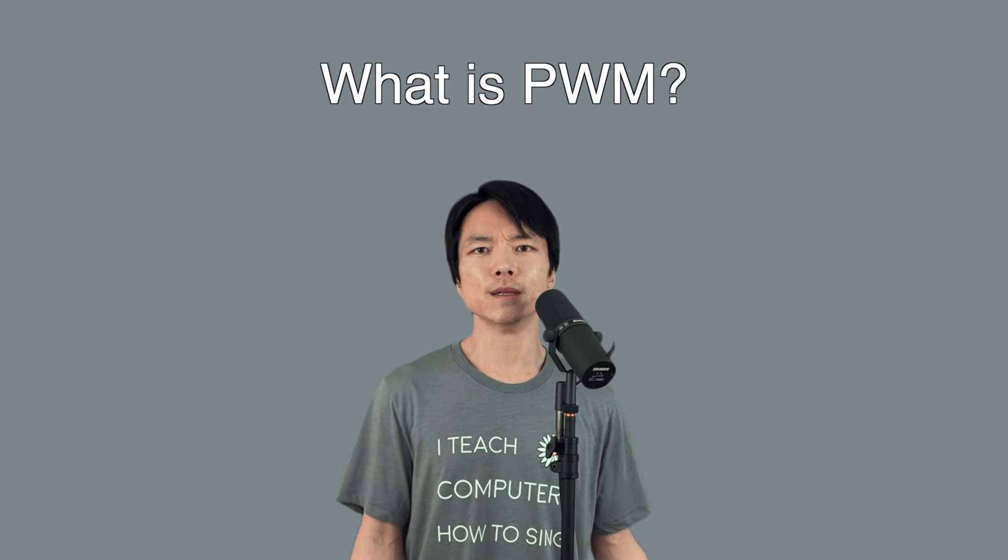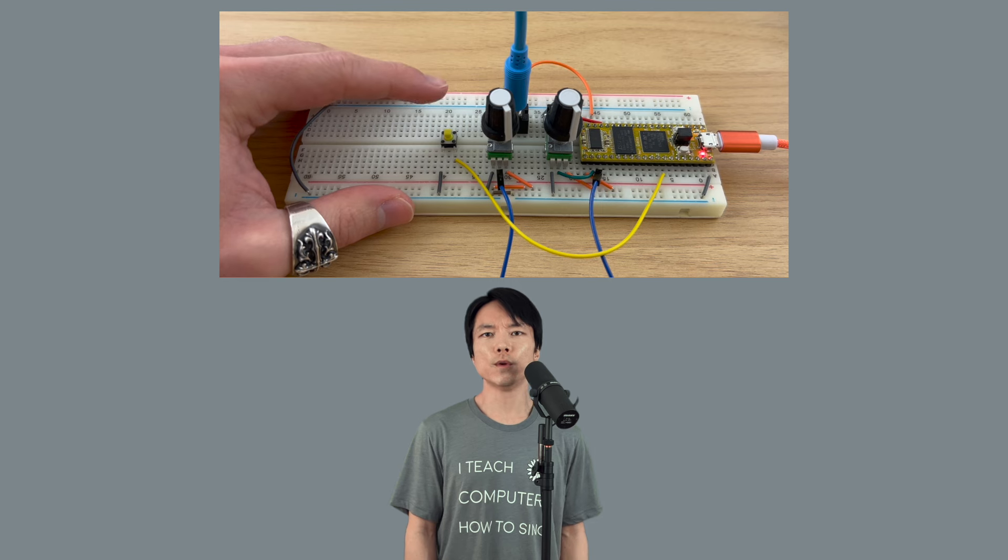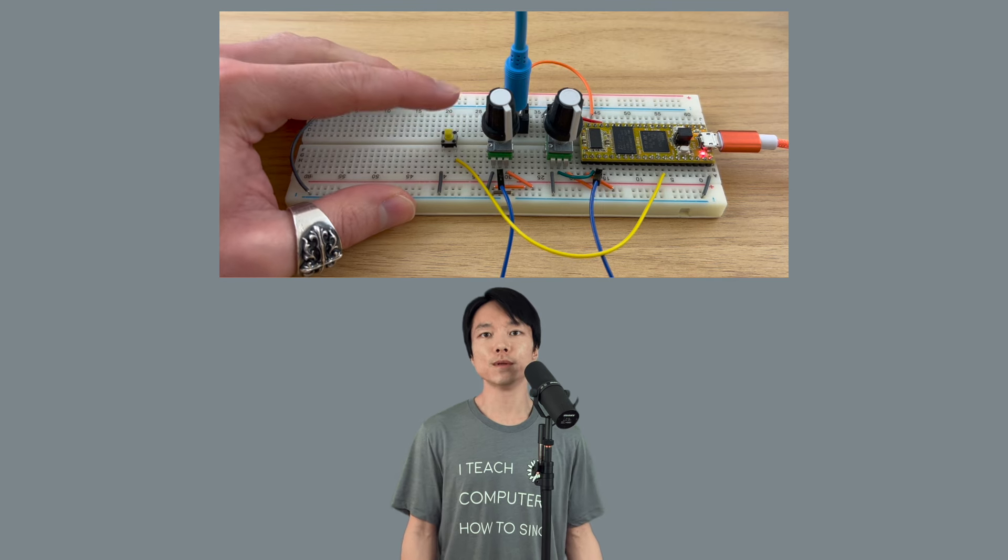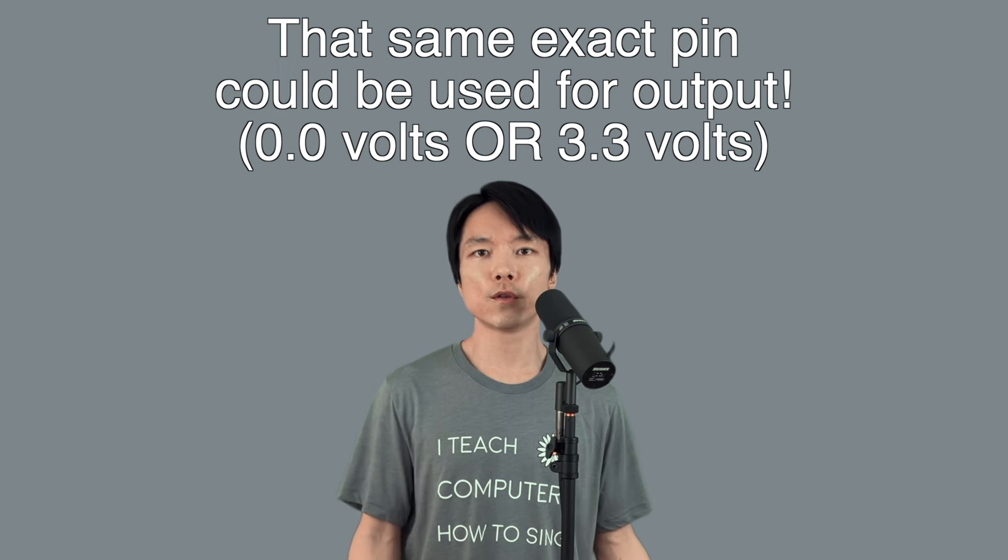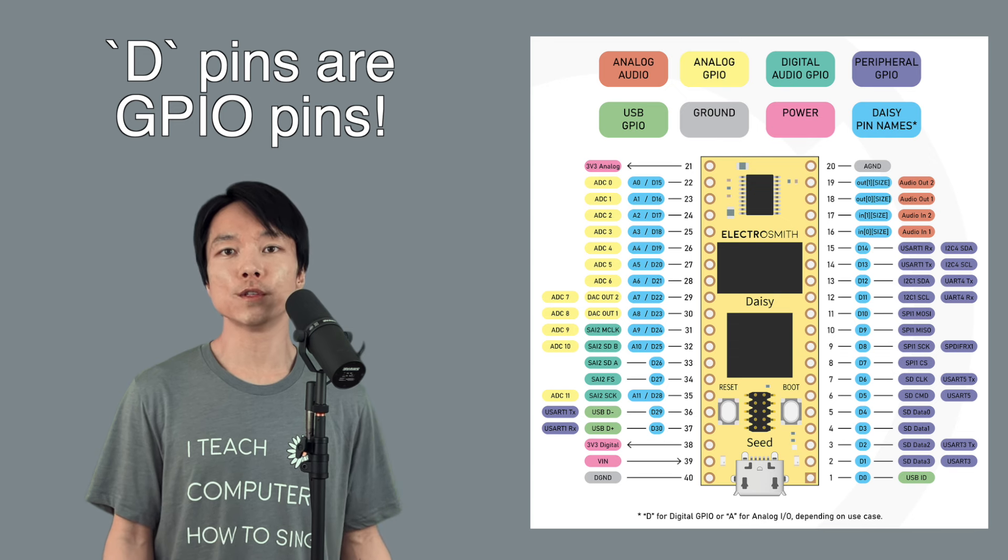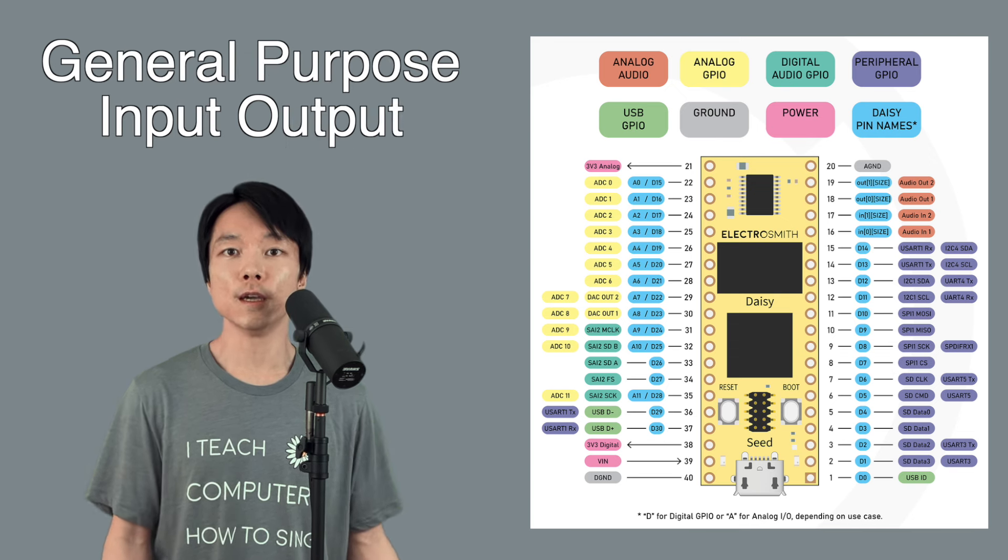So what is PWM? In the previous tutorial, we used the daisy's pin as digital input. We can also use the pin as digital output, which can either output 0.0V, or 3.3V. These types of pins are typically referred to as GPIO, which stands for General Purpose Input-Output.